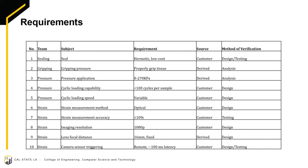The requirements are divided into sub-teams. For sealing, we require a hermetic chamber which is also low cost. For gripping, the requirement is that it must properly grip the tissue. For pressure, we have the derived range of 0 to 40 psi, and the cyclic loading capability must cycle each sample 100 times or fewer, with variable and adjustable loading speed. For the strain measurement, it must be optical with an imaging resolution of 1080p, the lens focal distance must be fixed at 16 millimeters, and the sensor triggering must be remote with 100 milliseconds or less of latency.